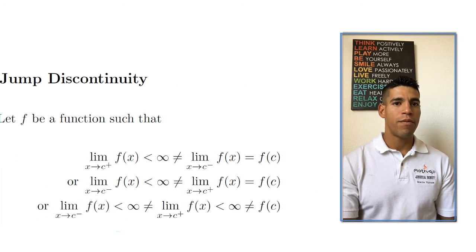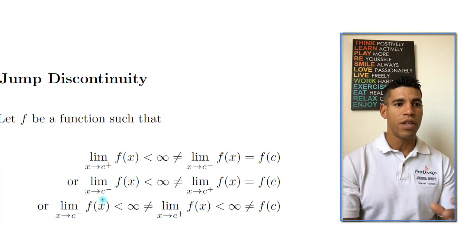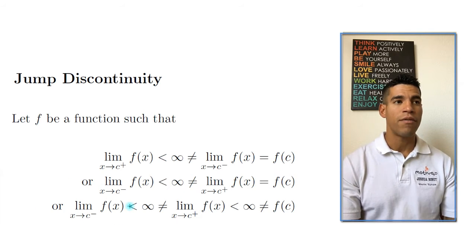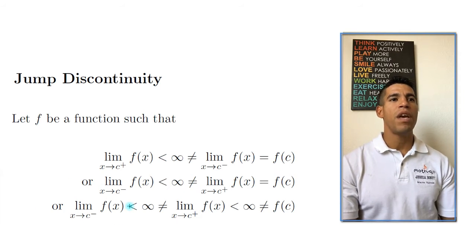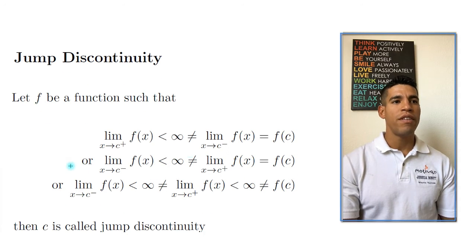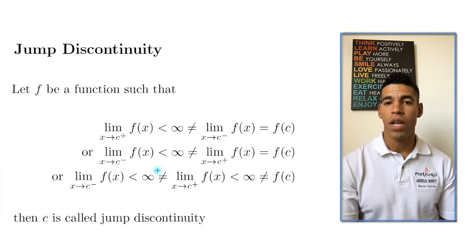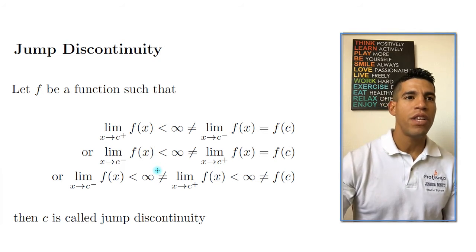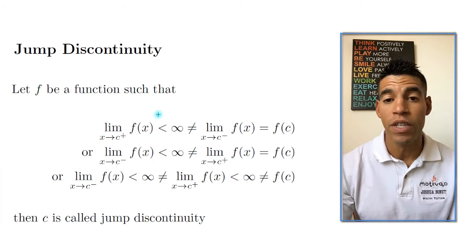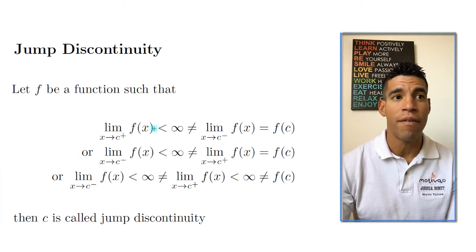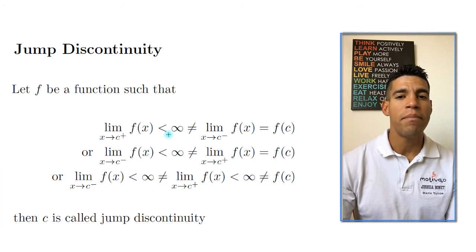For the definition of the jump discontinuity, there are three different conditions joined by 'or.' The first condition specifically says: the limit when x approaches c from the right of f(x) is less than infinity.